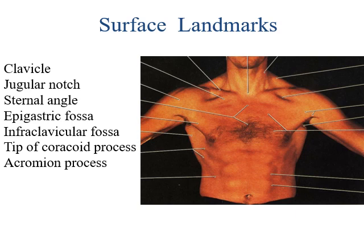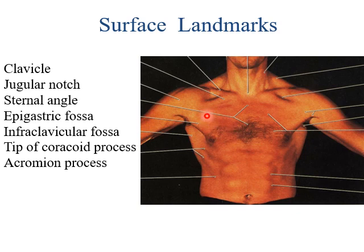The pectoral region lies on the front of the chest. It is that part of the body which connects the upper limb to the chest. Before dealing with the pectoral region, let us see the surface landmarks of the pectoral region.